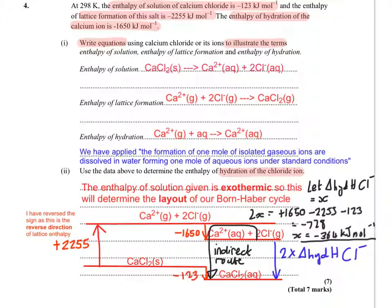So by following the black arrow starting at Ca2+ aqueous and 2Cl- gas, you go upwards. So you're going against the minus 1650. So it's plus 1650. You're going back down against the plus 2255. So it's minus 2255. And then it's minus 123 because you're going in the same direction of the enthalpy of solution. So that gives you minus 728. But that's 2x. We want x, x being the delta hydration H of the Cl- ion. So therefore, our final answer for this is minus 364 kilojoules per mole.